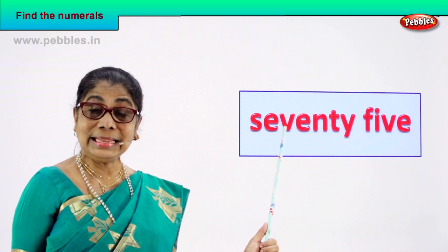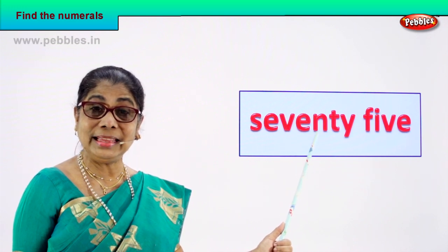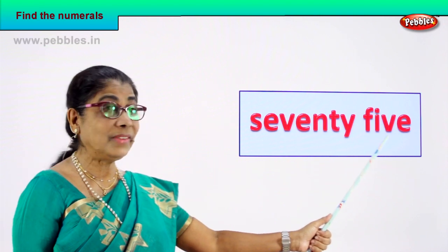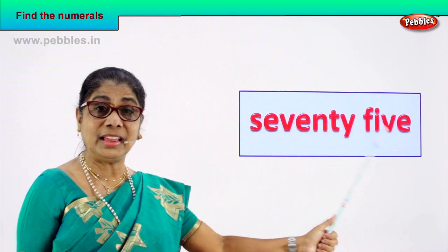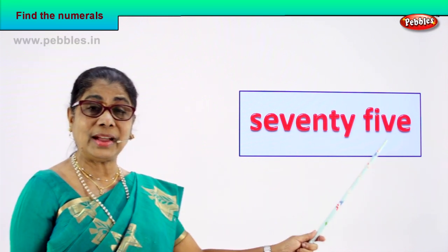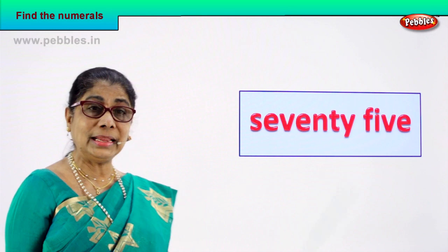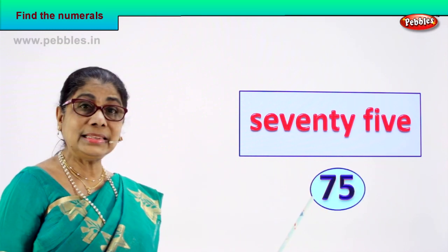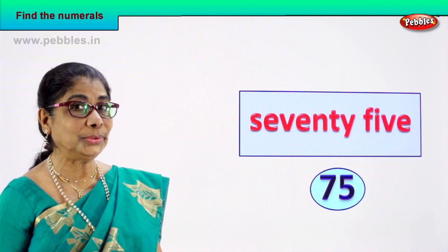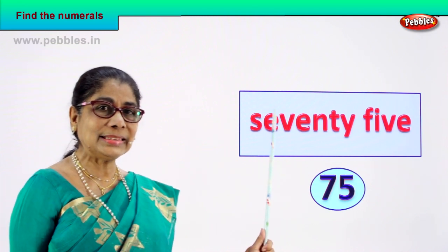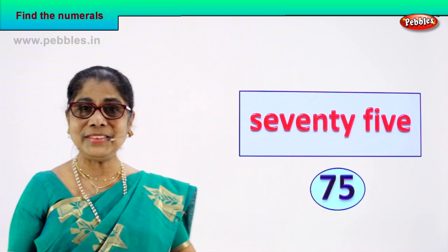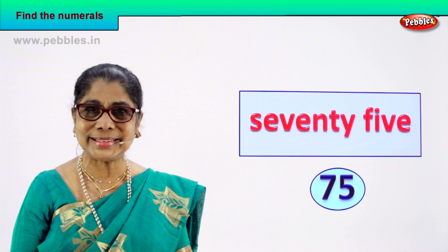Shall we take another number name? S-E-V-E-N-T-Y, 70. F-I-V-E, 5. Seventy-five, 75. How do we write the numeral? Seven and five — 75. Very good. You will learn to read 75 and the numeral is 7 and 5.